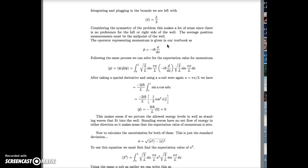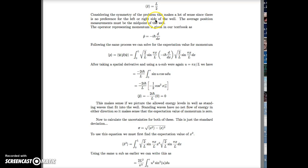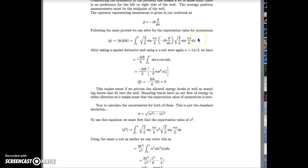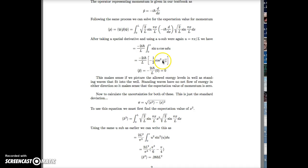The operator representing momentum is given in our textbook as this. Following the same process, we can solve for the expectation value of momentum. After taking a spatial derivative and using a u-substitution, where u is again pi x over L, we have this. We integrate and plug in our bounds and find that this term is equal to zero.